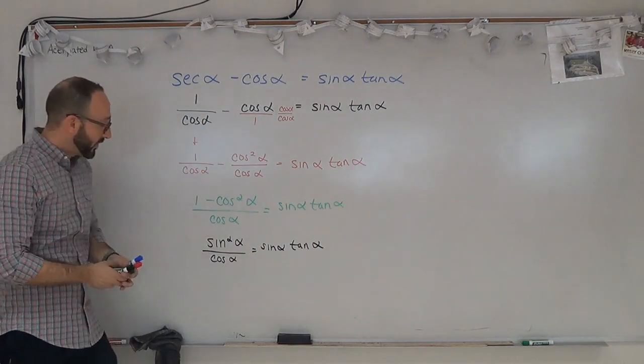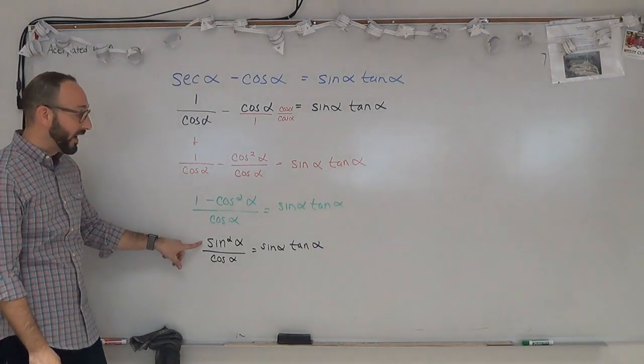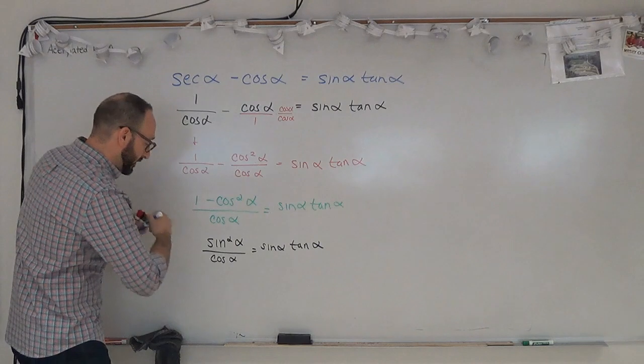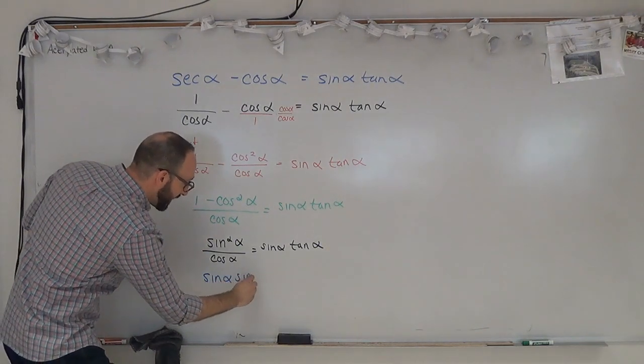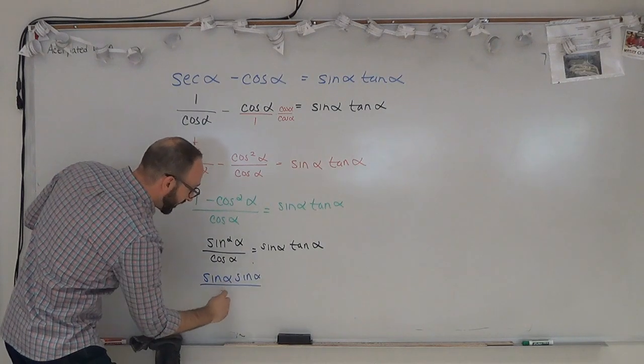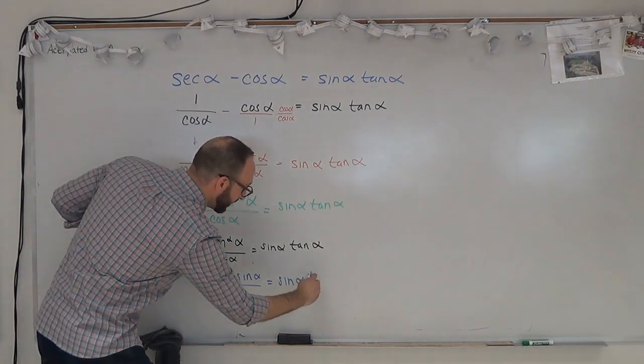Now, this is actually pretty good, because sin squared alpha is sin alpha times sin alpha. So if we break that up, we'll get sin alpha times sin alpha all over cosine alpha, and that should equal sin alpha tan alpha.